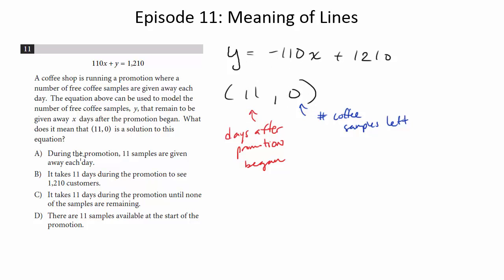So let's look at the choices. During the promotion, 11 samples are given away each day. No, we'll come back to this one in a second to talk about actually how many are given away each day. It takes 11 days during the promotion to see 1,210 customers. Be very careful. We're giving away a certain amount of coffee and we'll talk about where this number is coming from in a second. But we're not talking about the number of customers. Nothing here says anything about the number of customers. It doesn't say anything like we give one packet away to each customer and one only. This is not about the customers. It's about the packets.